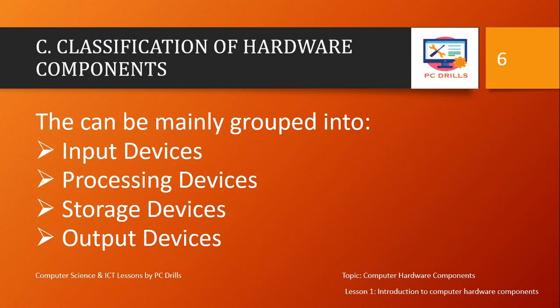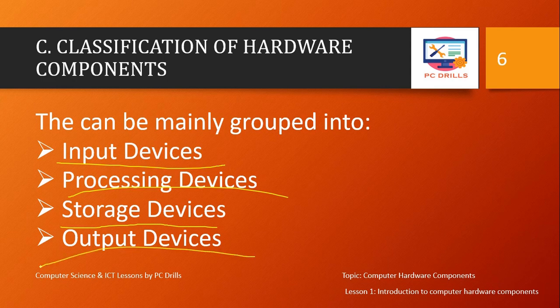Next, we have the classification of hardware components. It can be classified into various groups, but the main groups are: input devices, processing devices, storage, and output devices. Under the classification of computer hardware, you will always have these four: input, output, storage, and processing. Under input, you can have manual and automatic. Under storage, you can have secondary storage, primary storage, and so on. These are the four main groups of classification of computer hardware components.